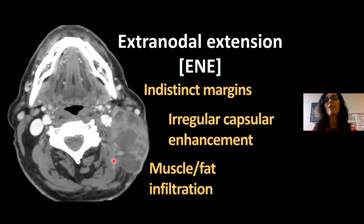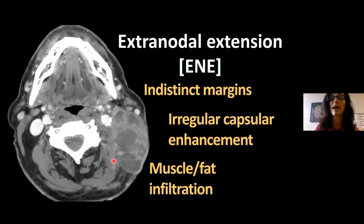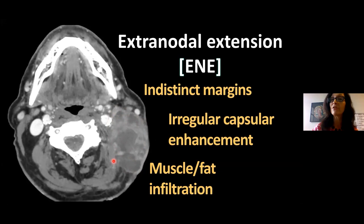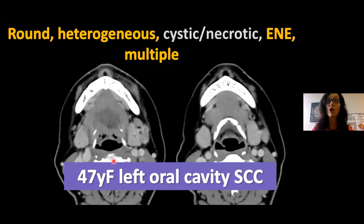Extranodal extension is the most specific imaging sign of malignancy. We're not terrifically sensitive for it, but when you see it, call it. This big, very heterogeneous nodal mass extends all the way through to the dermis — almost coming out through the skin and infiltrating muscle. This is extensive extranodal extension.